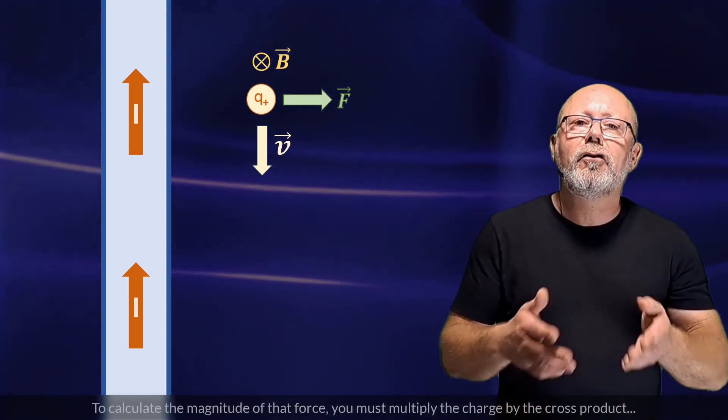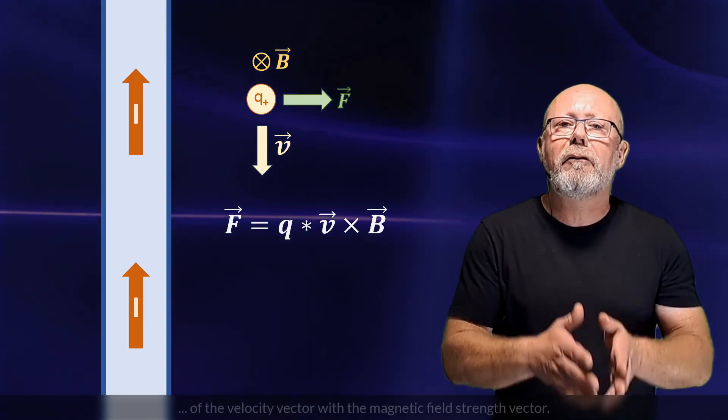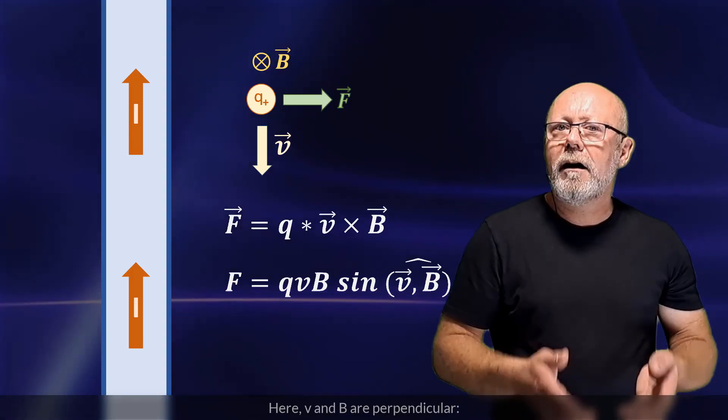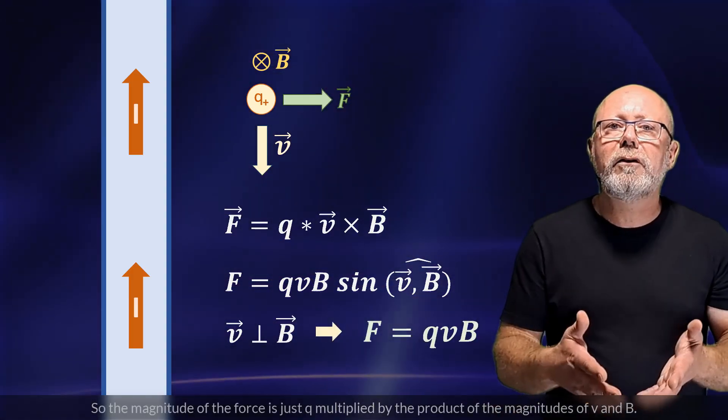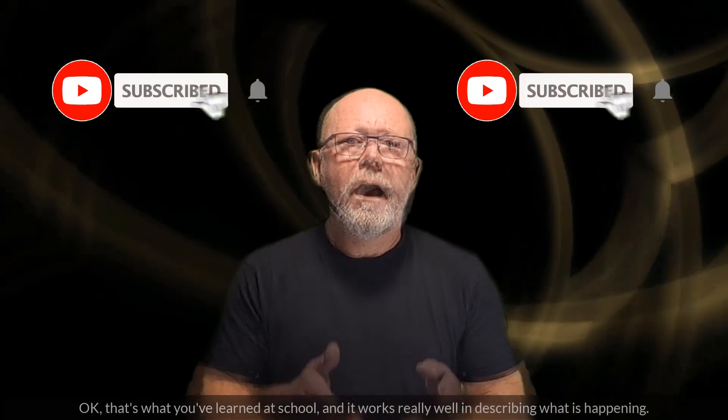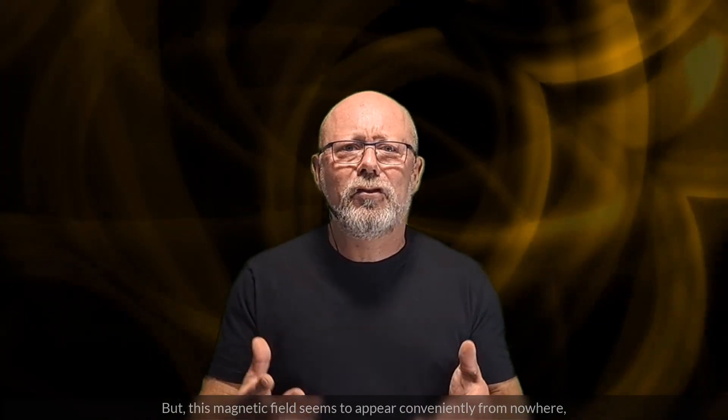By applying the rule to our example, the positive test charge moving downwards feels a force to the right, away from the cable. To calculate the magnitude of that force, you must multiply the charge by the cross product of the velocity vector with the magnetic field strength vector. Here, v and b are perpendicular. So, the magnitude of the force is just q multiplied by the product of the magnitudes of v and b. Ok, that's what you've learned at school, and it works really well in describing what's happening.